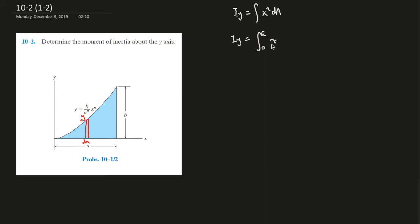So this is x squared times b divided by a to the power of n times x to the n. And this whole thing times dx, right? This is dA.